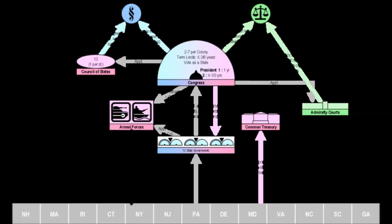The next slide shows a more visual description of the problems with the Articles of Confederation. The big one there is no power to tax — that's the one you would probably be asked on a test, either AP or SOL.